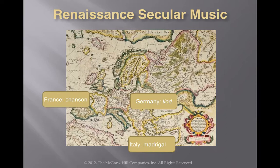Moving on to secular music, we will be talking mostly about the Madrigal, a piece of music that involved many different secular topics, mostly involving love and romance. As the Madrigal developed in Italy, similar pieces were developing in other nations. In France, it was called the Chanson, and in Germany, the Lied — all basically the same type of music, but different languages gave them different names.